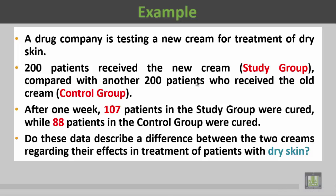بعد أسبوع من العلاج، في المجموعة الدراسة تم شفاء 107 مرضى، بينما في المجموعة الضابطة تم شفاء 88 مريضا. هل هذه البيانات توفر لنا دليلا على أنه هناك فرق بين الكريم القديم والكريم الحديث في علاج مرضى جفاف الجلد؟